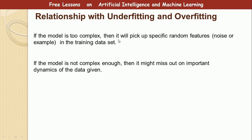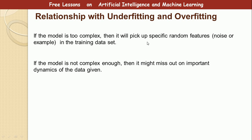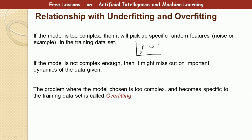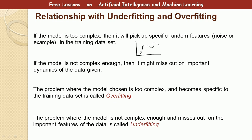If the model is too complex — meaning there is too much variance — it will pick up specific random features or noise from the training dataset. When the variance is too high it picks up everything, including the noise in the data. If the model is not complex enough, meaning there is not enough variance, it will miss out on the important dynamics of the dataset. When the model is too complex it is called overfitting, but when the model is not complex enough it results in underfitting.